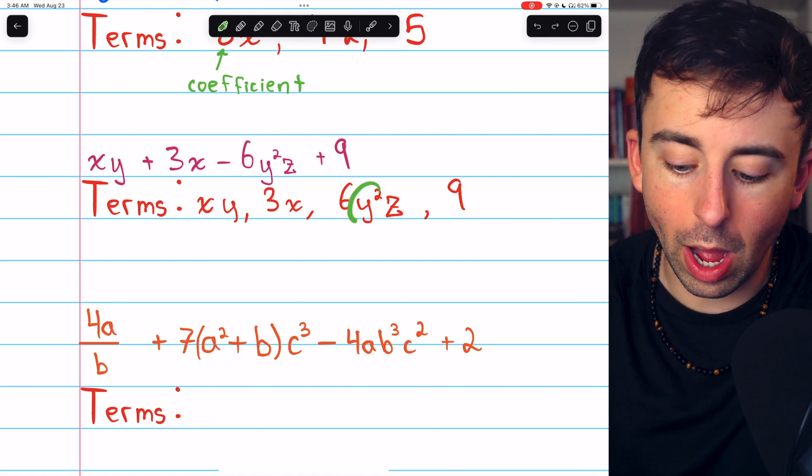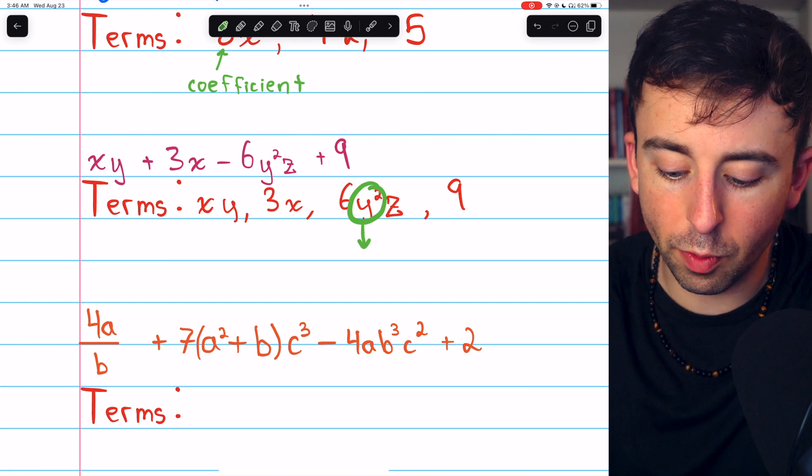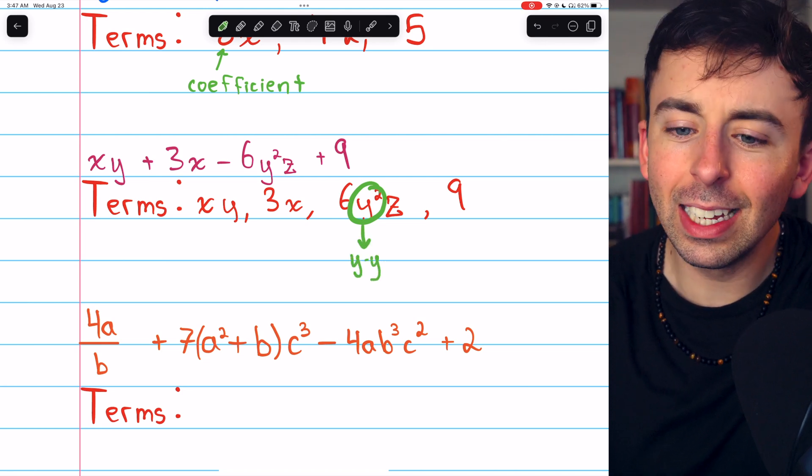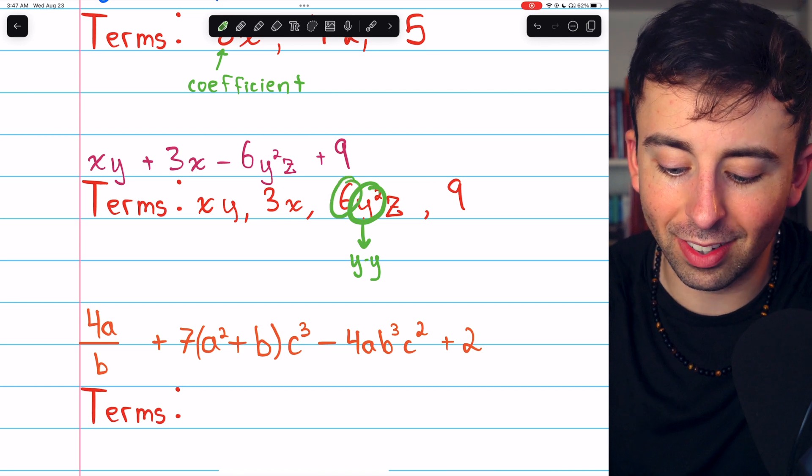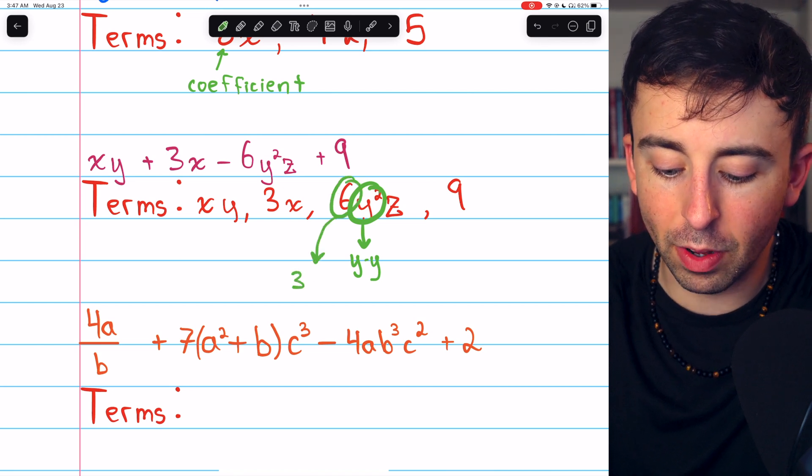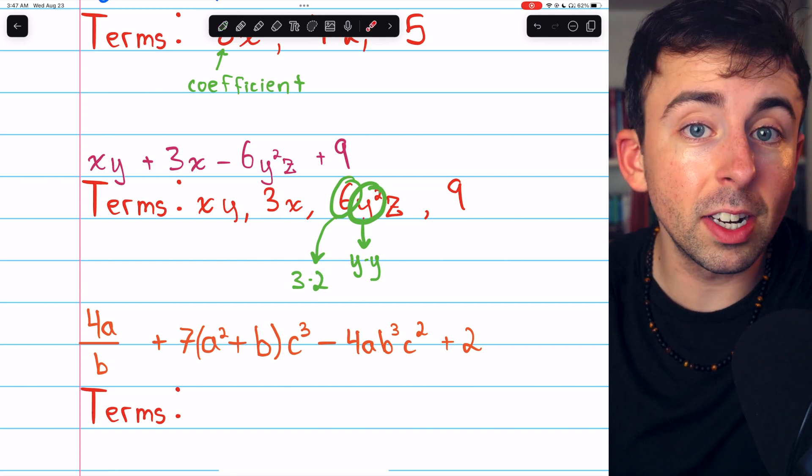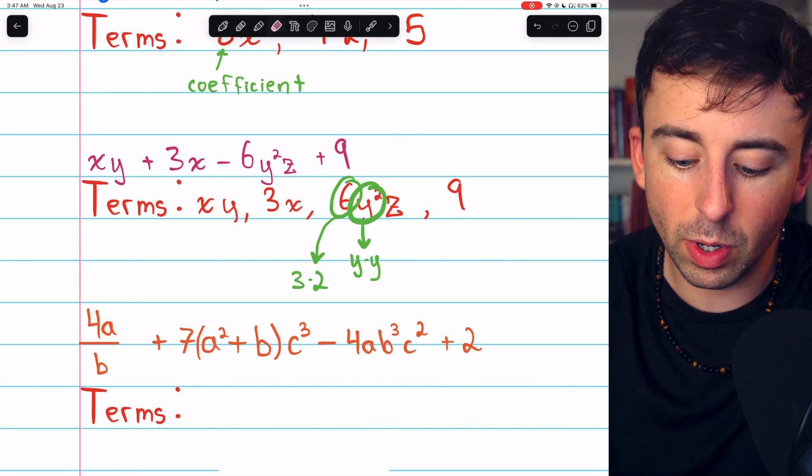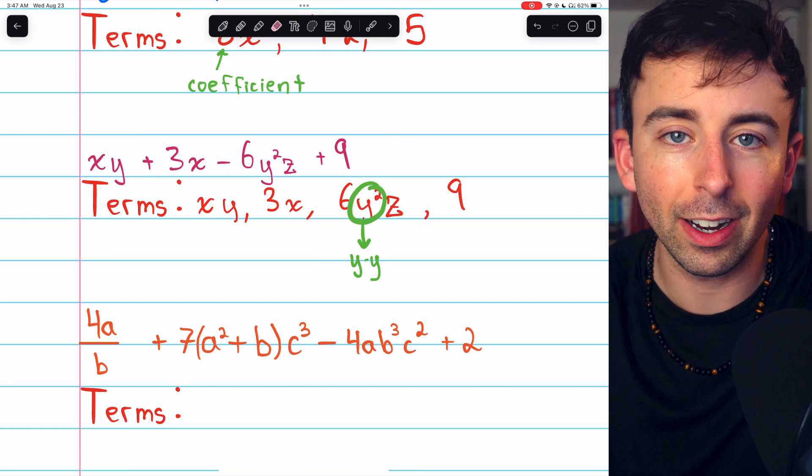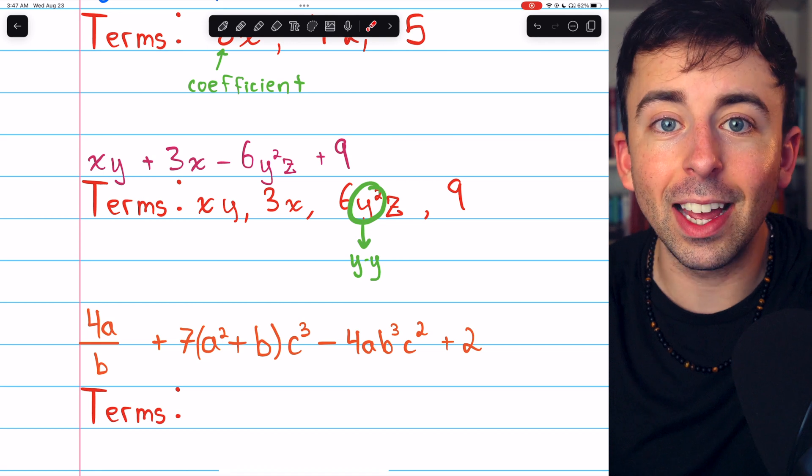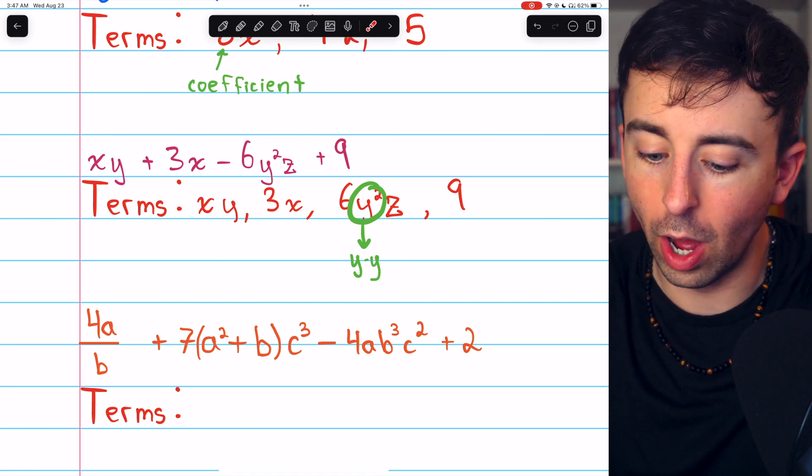Now you might wonder why y squared doesn't count as two factors, since y squared is y times y. It's for the same reason that we don't count 6 as two factors, even though 6 is 3 times 2. 3 times 2 is just a number. The number is 6. And so we generally consider that as one factor.